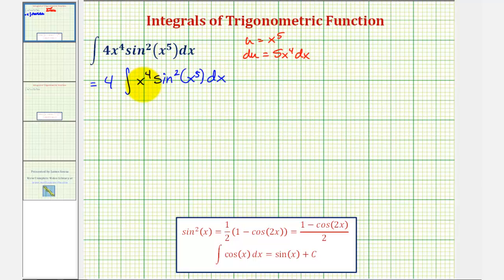Since we have x to the fourth dx, let's divide both sides by five. Therefore, one-fifth du equals x to the fourth dx.